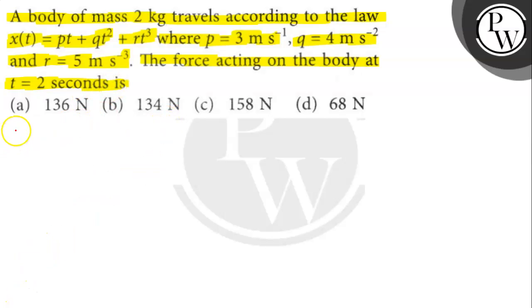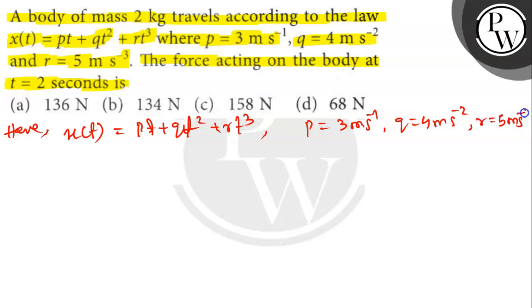Let's find out. Here, X(t) = pt + qt² + rt³, where p = 3 m/s, q = 4 m/s², r = 5 m/s³, and m = 2 kg.